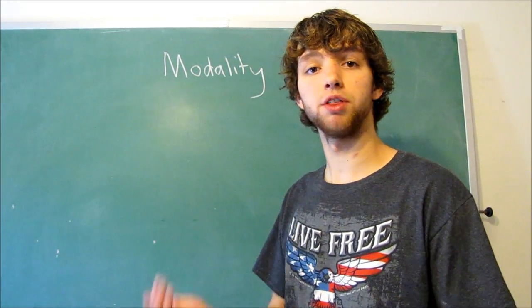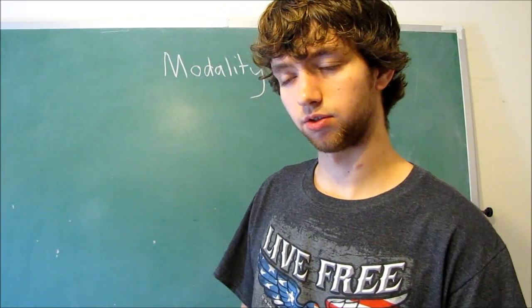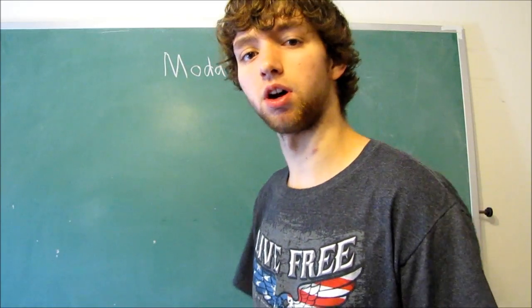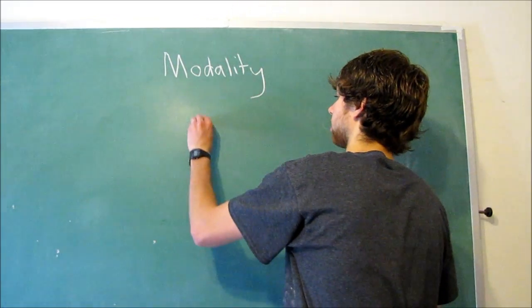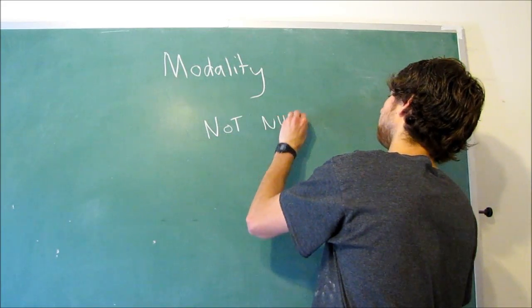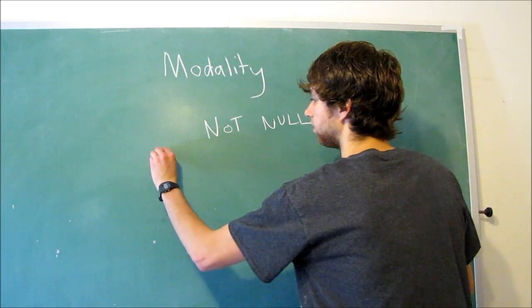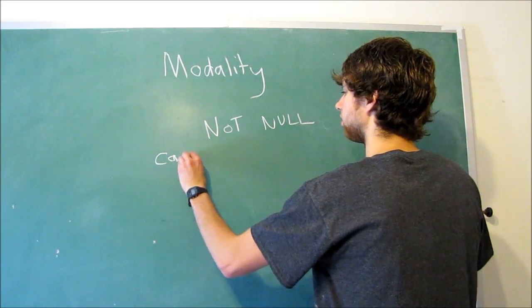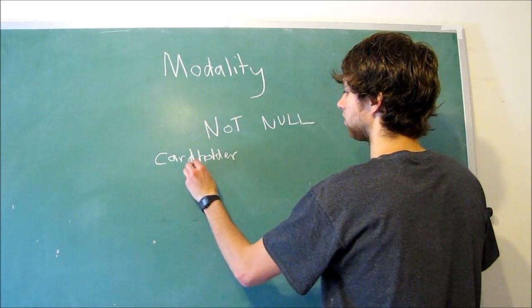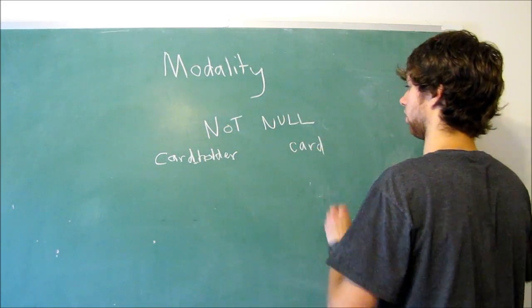Modality is basically whether or not the child is a required child, if the relationship is required. We talked about that when we talked about the column characteristic not null. So think of it like this. We have a credit card company, we have a table for the card holder, and then we have a table for the card.